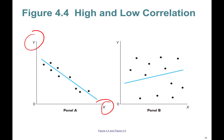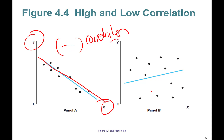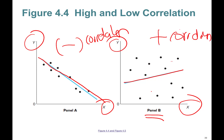Here are examples of high and low correlation. In Panel A, there is a strong negative correlation between X and Y — the regression line is steep. In Panel B, the fitted regression line is flatter and it is a positive correlation, but it represents a weaker correlation because the line is flatter. See you in Chapter 4 Part 7.